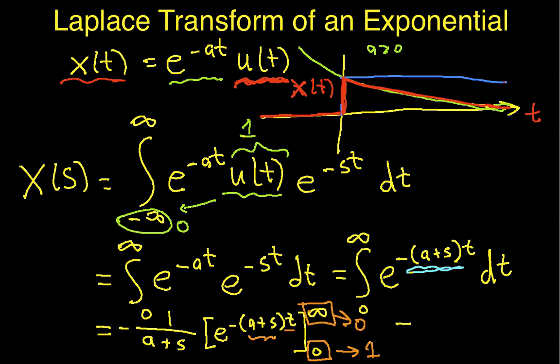So, this becomes then 1 over (s plus a), where what I've done here is I've interchanged (a plus s) to (s plus a), because this is the way you usually see it written. So, this is the result that you see. This is a very useful result. It gets used all the time. The idea that if I have a decaying exponential e to the minus at, that the Laplace transform of it is 1 over (s plus a).